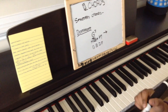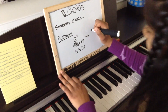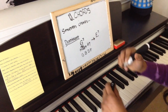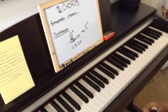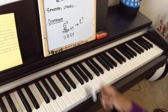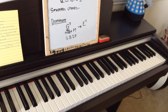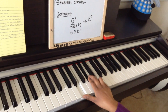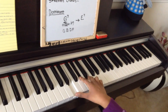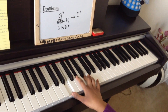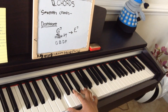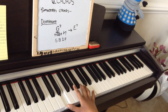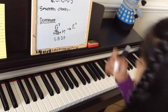Now let's try E seven. You take your major triad plus your flat seven. That's your E major triad, and then you add on your flat seven. So it's E, G sharp, B, D.